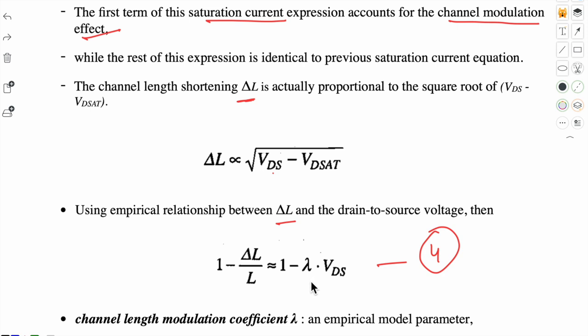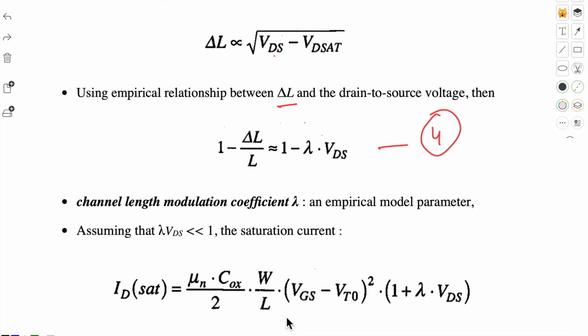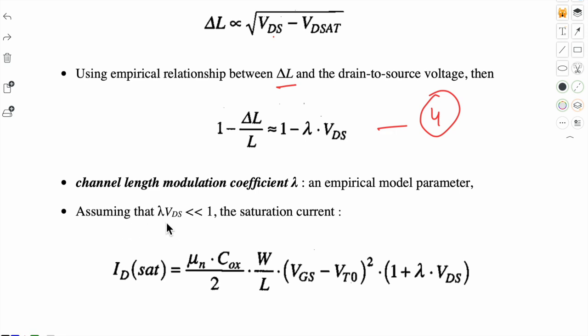Lambda is a coefficient which we call channel length modulation coefficient. So this is an empirical model parameter. And now we are assuming that this lambda VDS is very very less than 1. So the saturation current is given by equation 5.